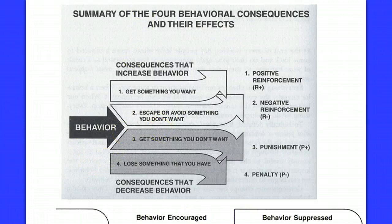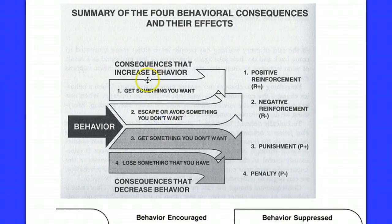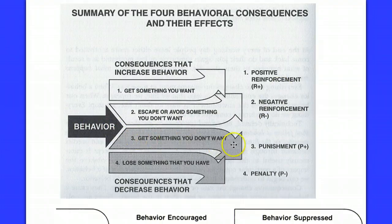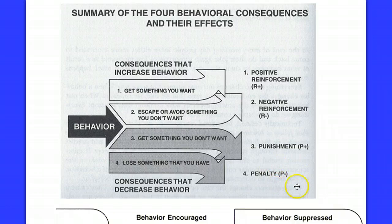Here's a graphic that summarizes the four types of consequences to behavior. You do a behavior and get something you want — that's positive reinforcement. You escape or avoid something you don't want — that's negative reinforcement, and you'll do the behavior more. You do a behavior and get something you don't want — that's positive punishment. Or you lose something you want, like TV time — that's negative punishment. Both punishments should decrease the behavior.